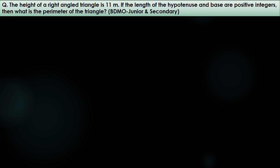The problem: the height of a right angle triangle is 11 meters, and the length of the hypotenuse and the base are positive integers. What is the perimeter of the triangle? Since the triangle is a right angle triangle, we have a hypotenuse — let's call it capital H — a height, small h, and the base, b.